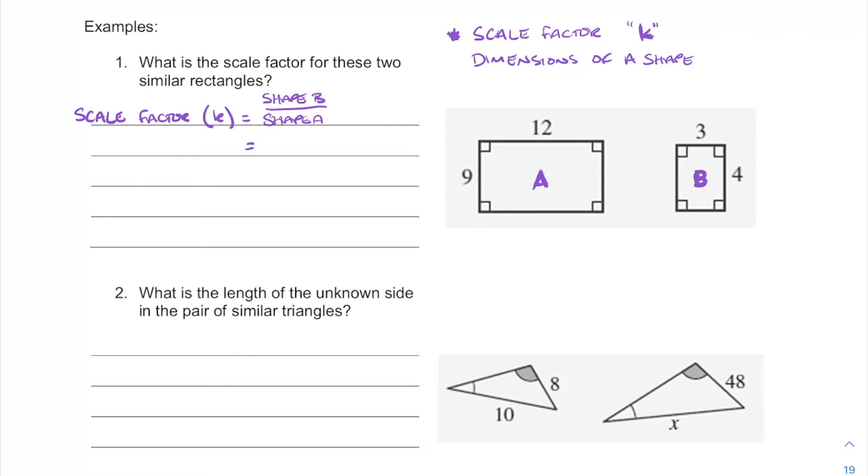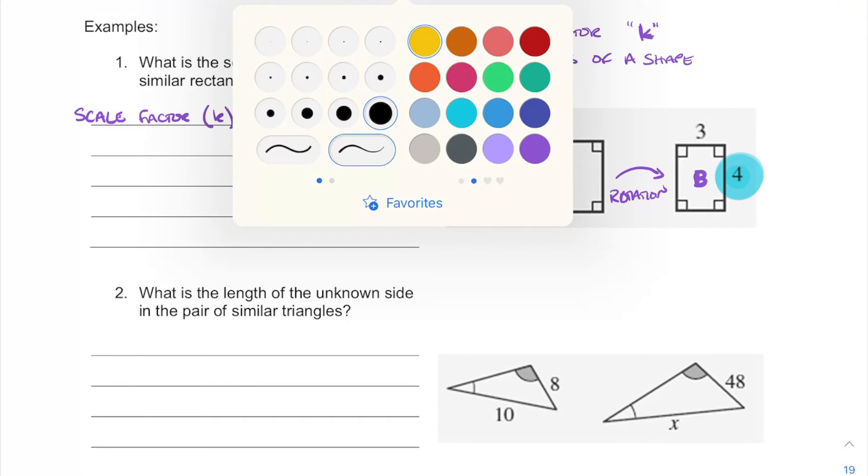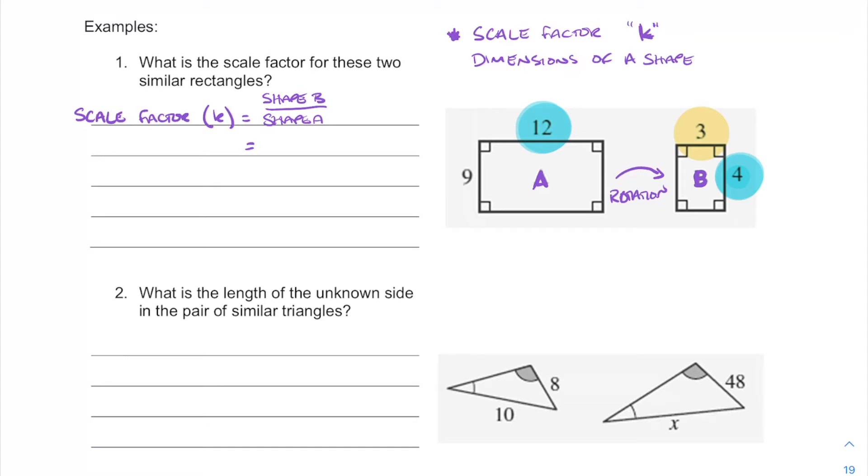Now we have two different types of matching sides here because we want to find our corresponding sides. If we have a look at shape B, we can see that shape B is a little bit smaller than shape A but it's also been rotated around. So that's going to help us find our corresponding sides. Here we have four, the number four and the number twelve. Those two guys, they're matching, they're corresponding. And the other two guys, this three and this nine, they're also corresponding.